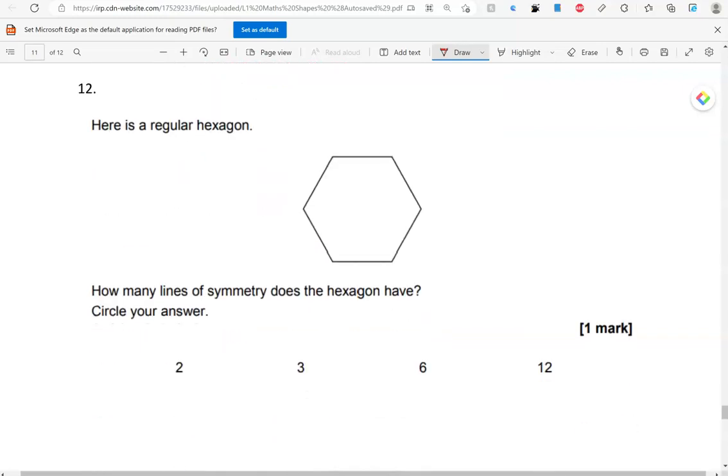Here is a regular hexagon. How many lines of symmetry does the hexagon have? Circle your answer. Again, we said earlier that because this is a regular hexagon, the number of lines of symmetry will be equal to the number of sides. So, hexagon has six sides. So, it has six lines of symmetry. And if you've forgotten that, you can always draw the lines of symmetry to help you. So, that is six of them.